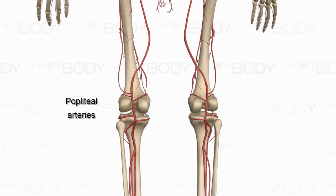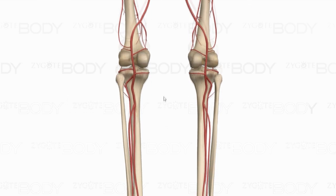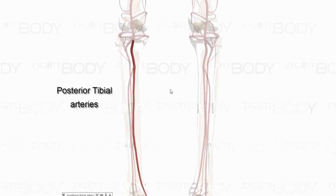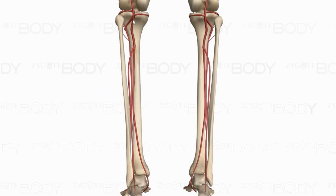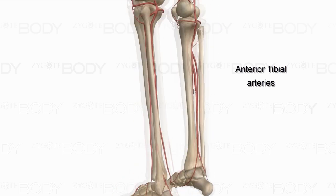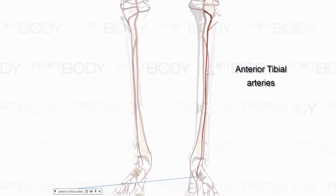A good way to remember it: if you bend your knees and they pop, that's your popliteal region. The popliteal artery continues down behind the tibia, giving it the name posterior tibial artery. A branch coming off that goes toward the front of the tibia — that is the anterior tibial artery.